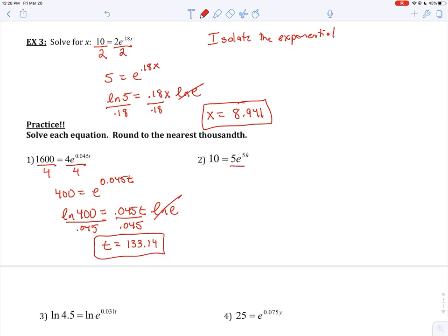With number 2, we're just going to divide the 5 on each side. We're left with 2 equals E to the 5K. Natural log of each side again. Getting a little repetitive at this point, but hopefully it's kind of sinking in. That becomes a 1. Divide by the 5 there. And we should get a K value of 0.139.